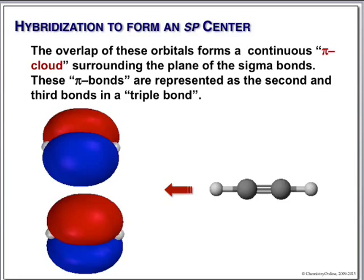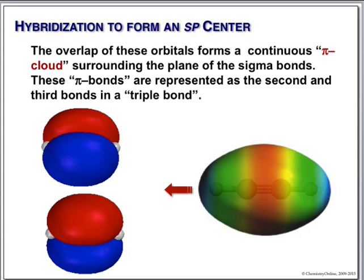Our geometry is linear. Because we have all these pi electrons between the carbons, the electrostatic potential map shows a nice big band of electrons, and this is going to be the center for the reactions of alkynes. But before we do any alkyne reactions, the first thing we always have to do with a new functional group is name it.